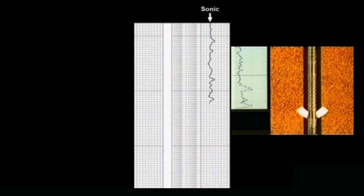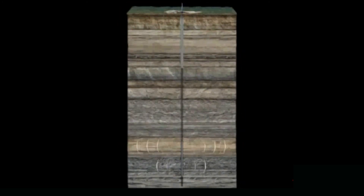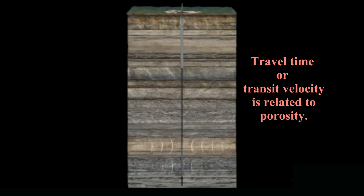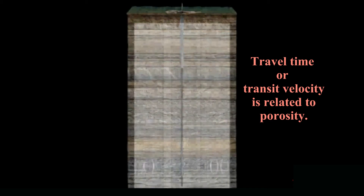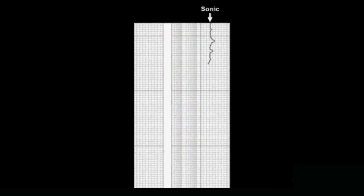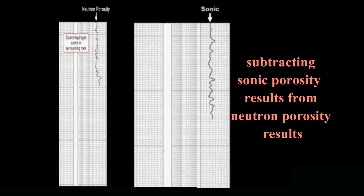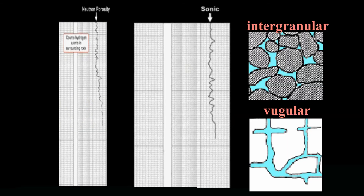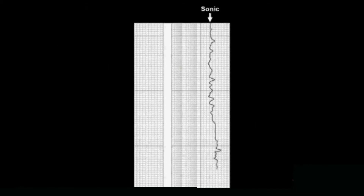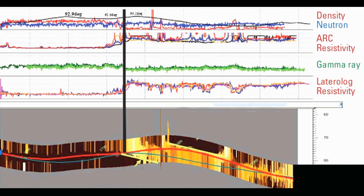Third, the sonic log generates a sound pulse measured by its travel time through the formation by receivers mounted some distance from the sound generator. This travel time, or transit velocity, is related to porosity. By subtracting the sonic porosity results from the neutron porosity results, we can more accurately separate the intergranular and vugular porosities. Knowing the lithology from the SP and gamma ray logs, the porosity can be more accurately calculated to give us total porosity.